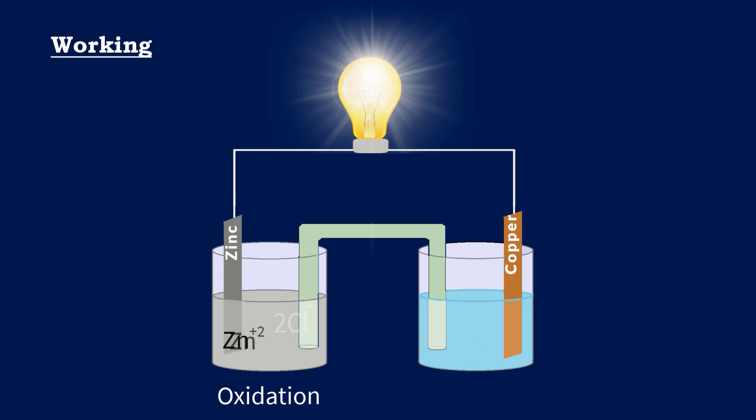At the anode, oxidation takes place, while at the cathode, reduction takes place.